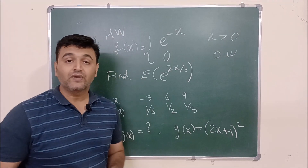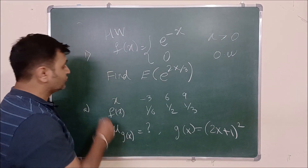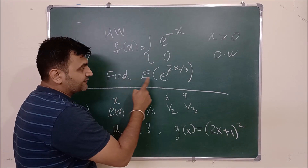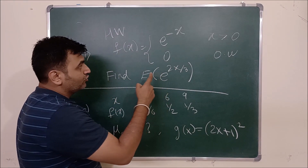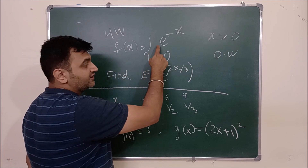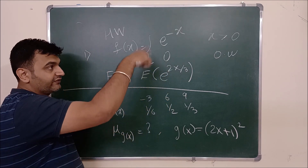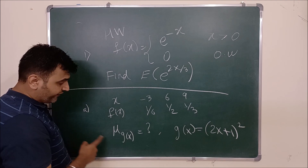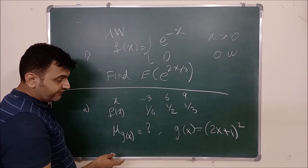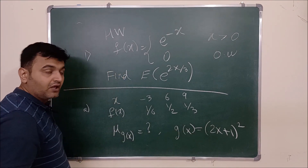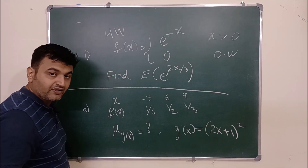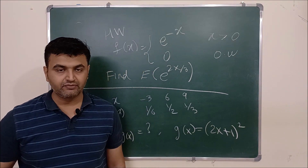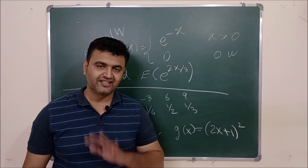Here are two homework problems for you. The first gives a PDF — integrate x times e^(2x/3) from 0 to infinity to find E[X]. The second gives a joint PMF and asks you to find the mean of g(x), a given function. Please comment your answers below. If you have any doubts about the concept of expected value of a random variable, ask in the comment section. Thank you.